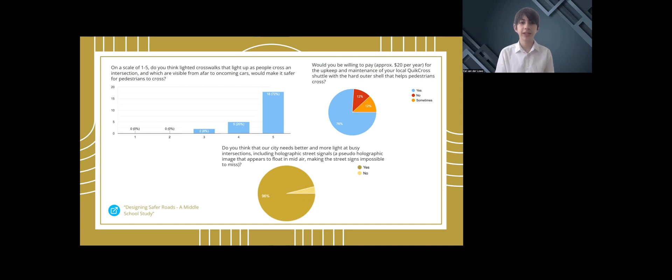Today, I'll focus on three notable findings for the solutions we thought would be the hardest to implement. On the top two graphs, you'll notice that most survey respondents voted four to five to implementing our Quick Cross solution. They also agreed to fund and pay for maintenance of a shuttle through a local yearly tax. We also had an overwhelming 96% approval of our holographic street signal solution that would improve lighting.